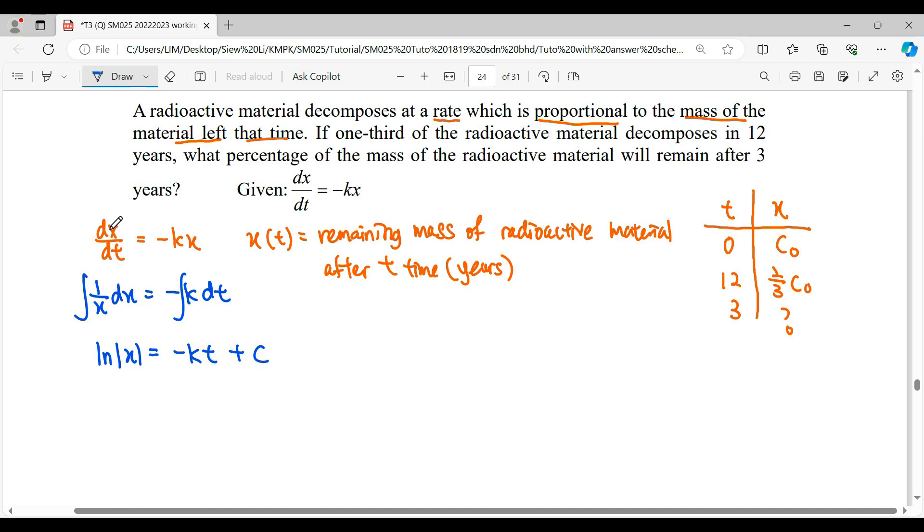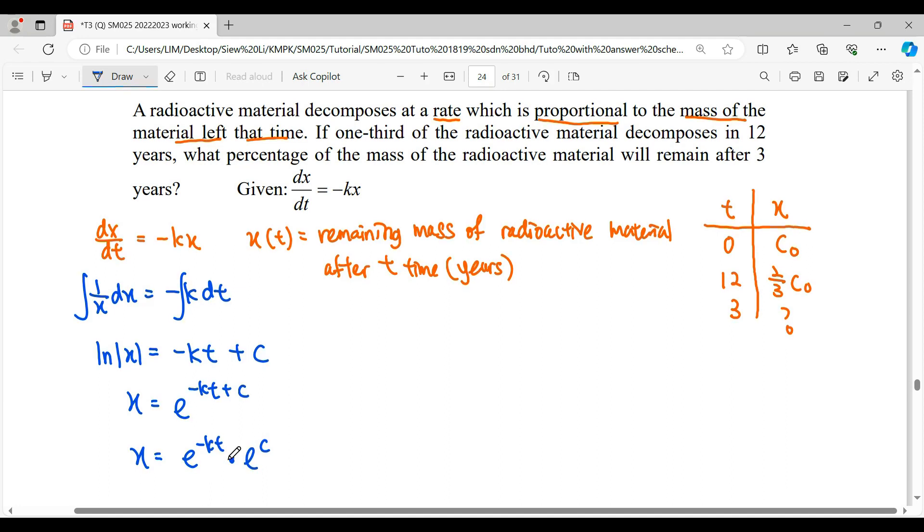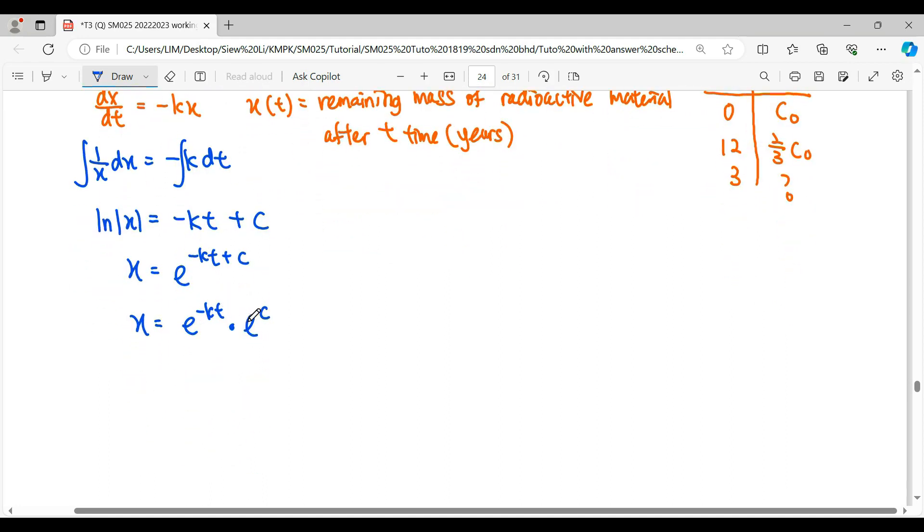So what is our general solution? It will be x in terms of t. So in the subject of x, we have to remove this ln. So we unlock. When you unlock, the base e moves to the right hand side. So everything here will become power. And then e power negative kt plus c, it will be same as e to the c in multiplication. When indices multiply with indices, the power will be plus. So we split it up.